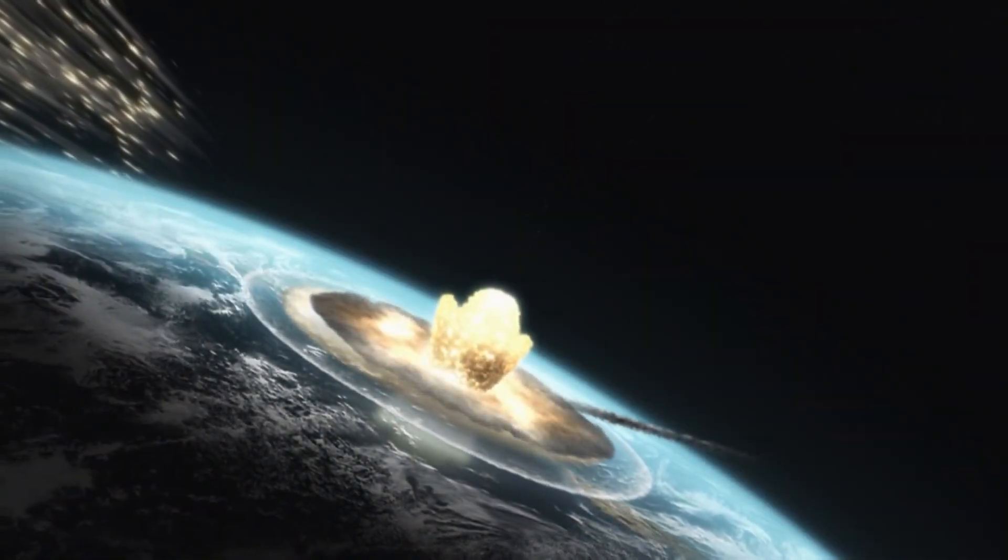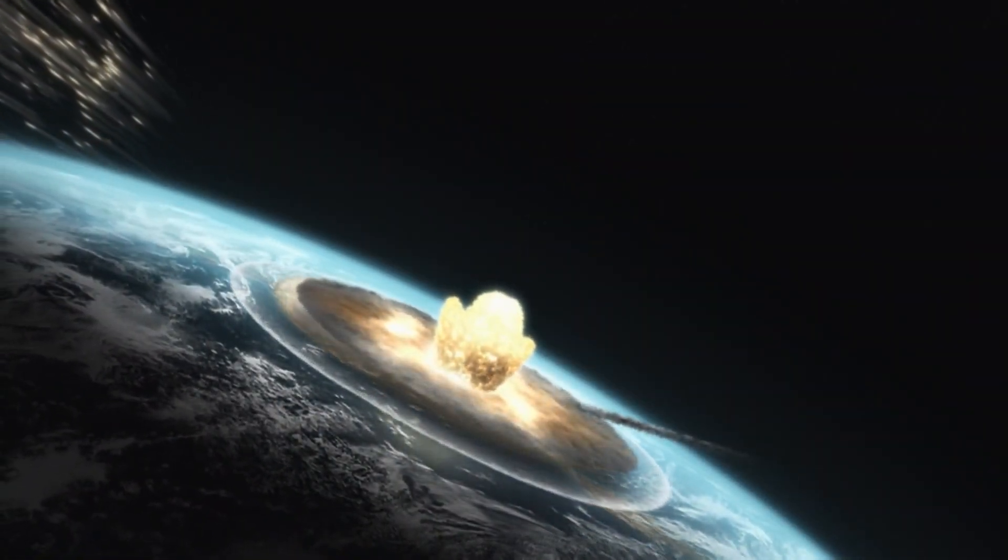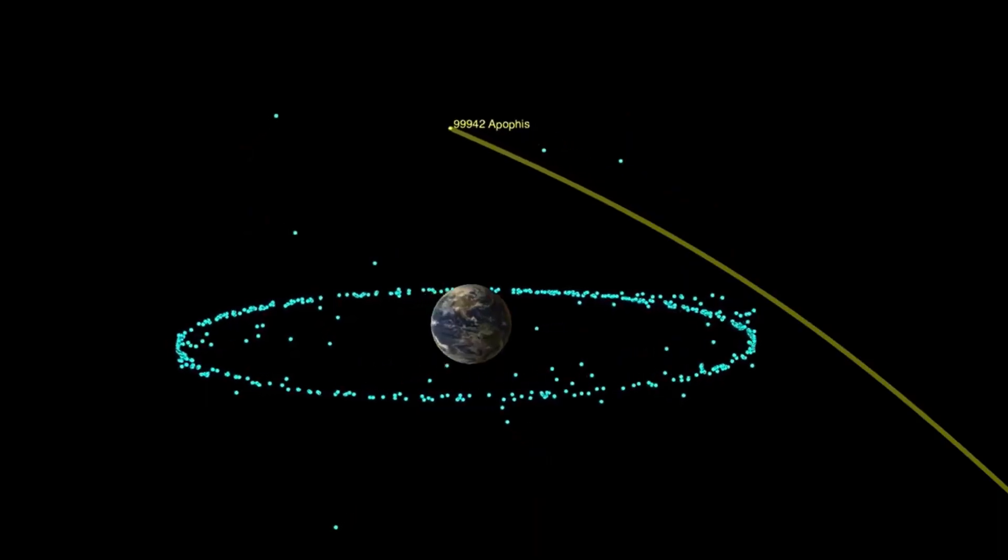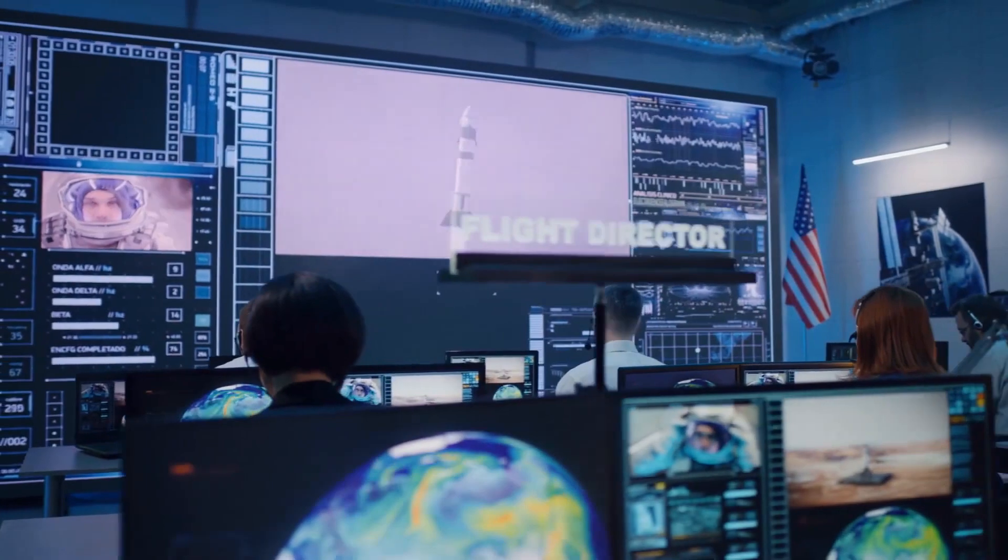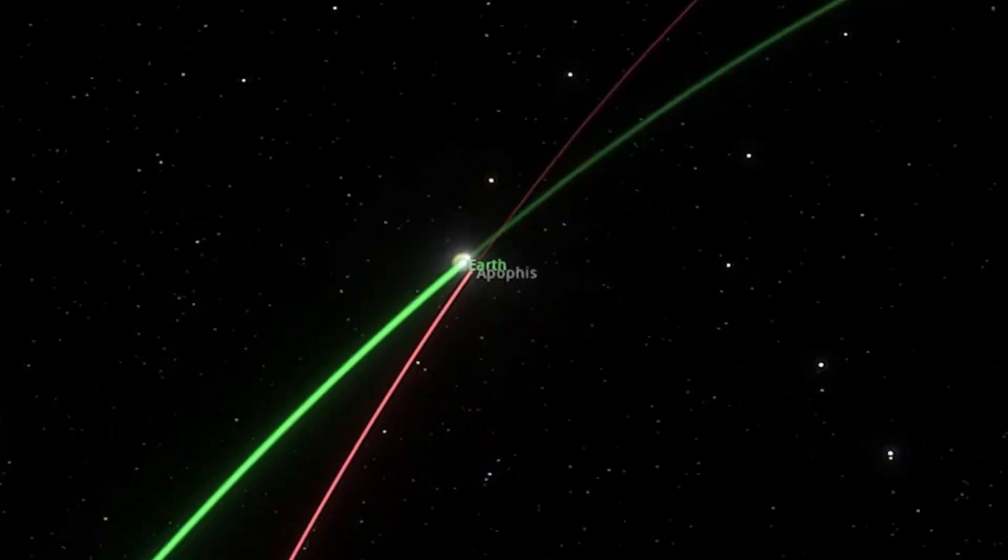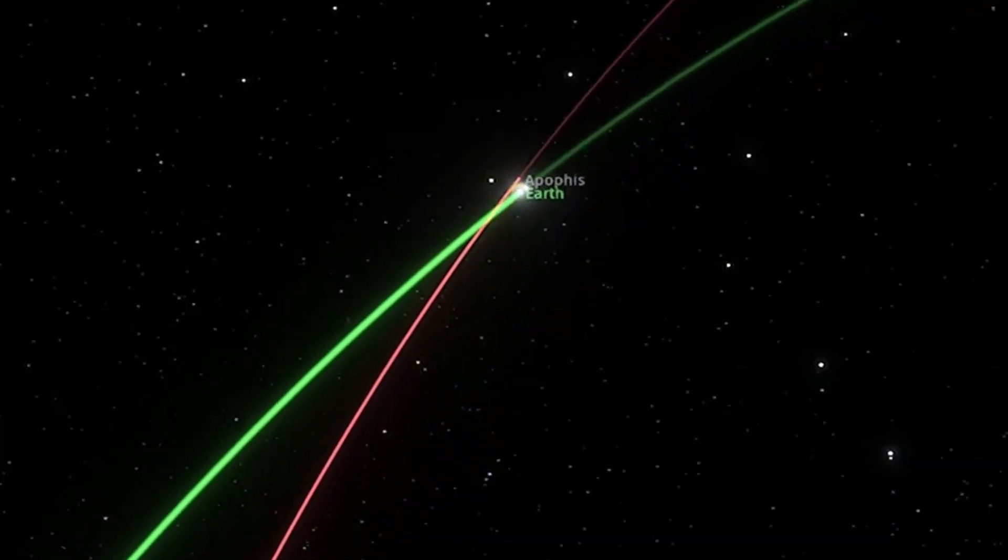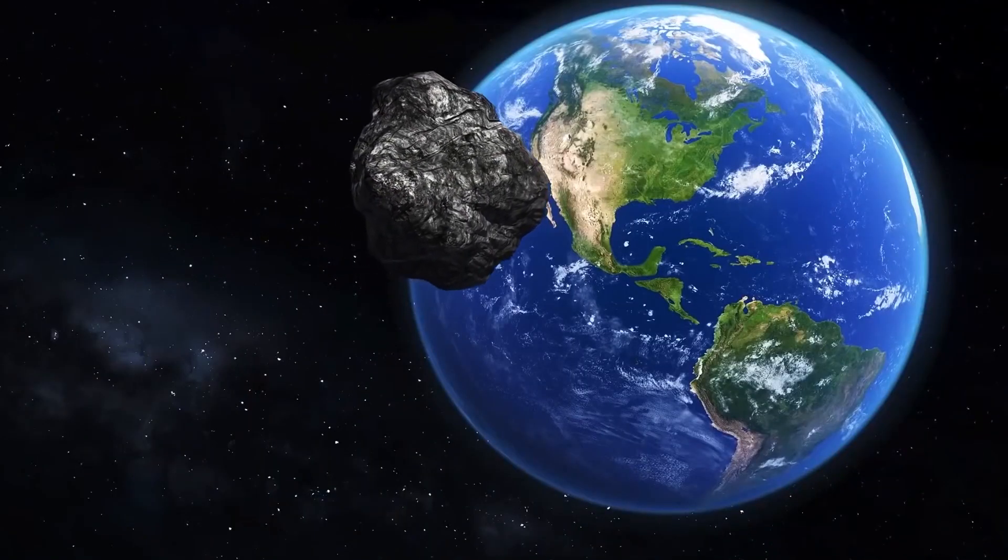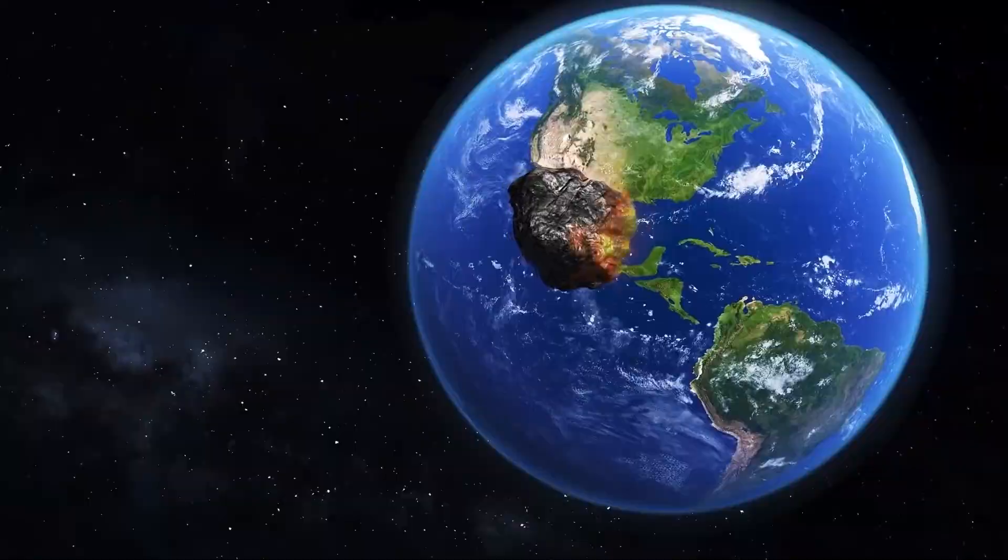I must say, the history of the Earth knows an example of a catastrophic fall of a celestial body that caused mass extinction. We are talking about an asteroid called Chicxulub. It collapsed on the Yucatan Peninsula 65 million years ago. It is with this that scientists associate the disappearance of dinosaurs. What to do?